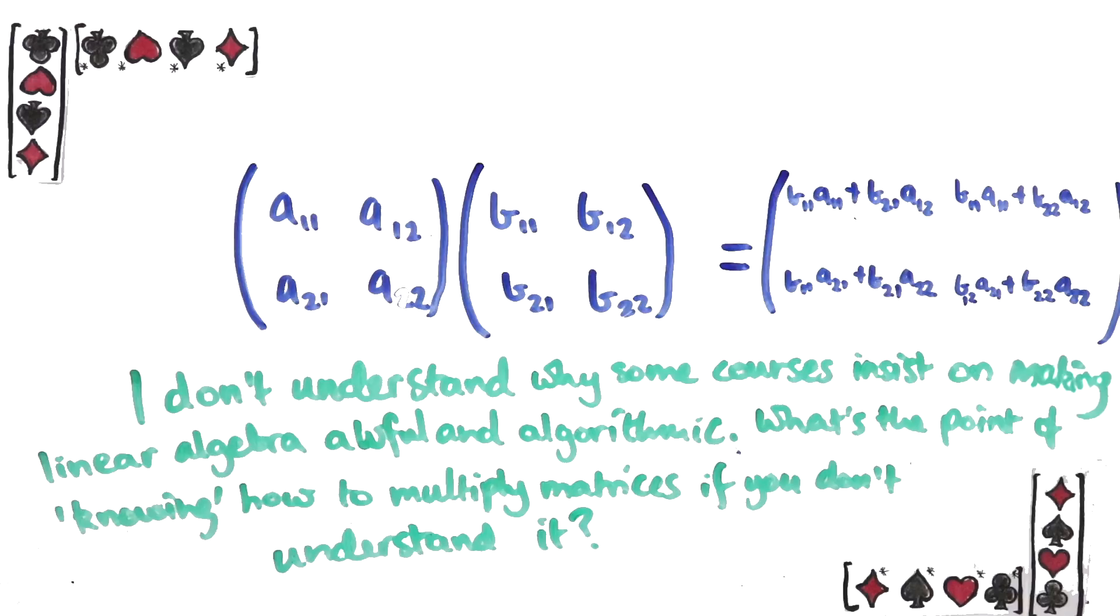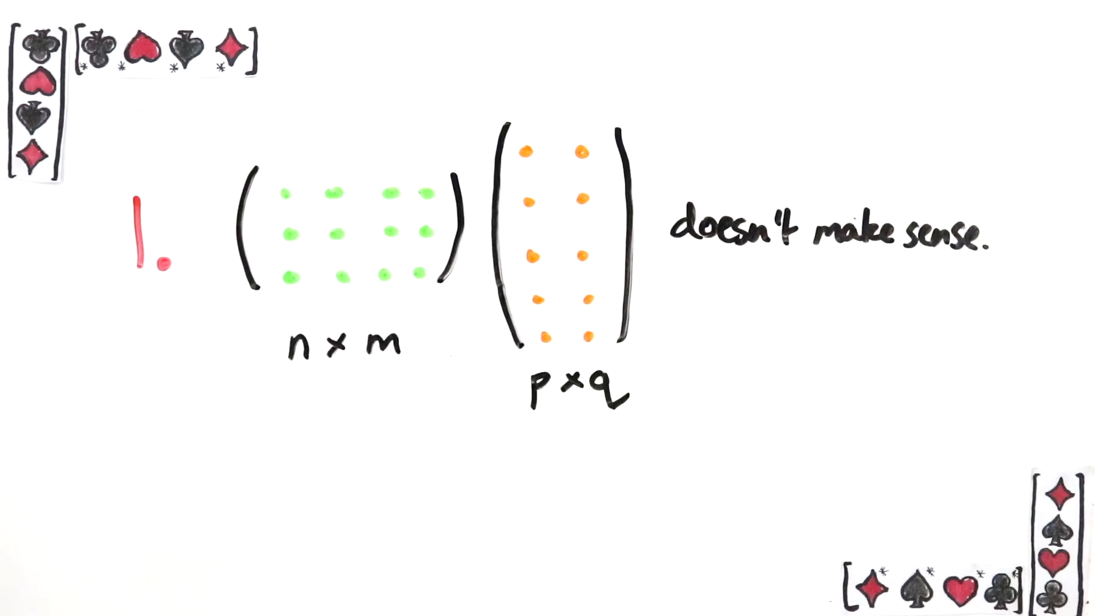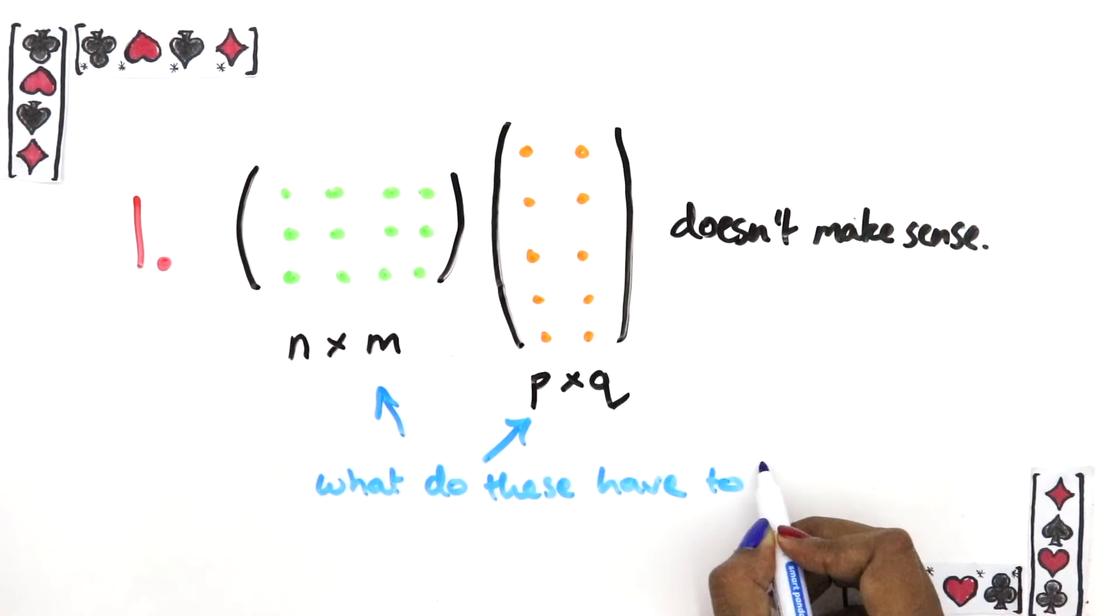Okay so it's homework time. First not all size matrices can be multiplied together. Think about it in terms of them representing transformations from one space to another and figure out which size matrices can be multiplied and explain why in the comments.